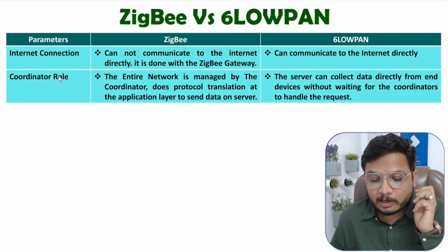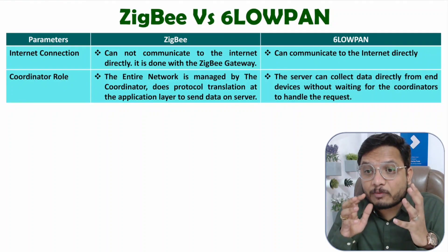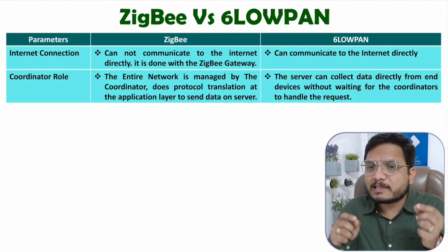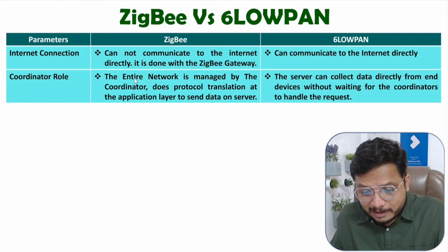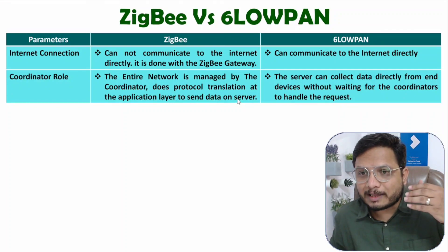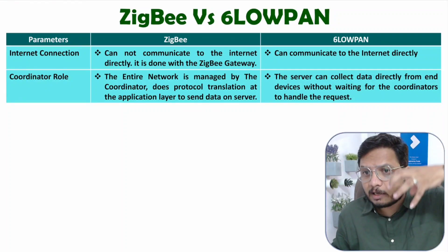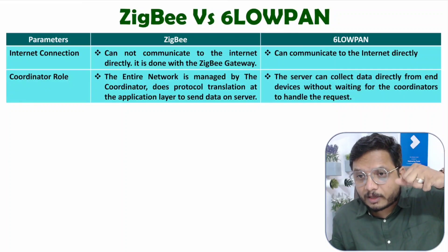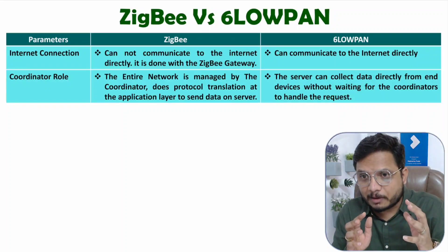The second parameter is the coordinator role. The coordinator in a ZigBee network is a network controller — the entire network is controlled by the ZigBee coordinator. The whole network is managed by the coordinator. It performs protocol translation at the application layer to send data to a server, and communication to other networks happens via the coordinator only. In a tree topology, the root is the ZigBee coordinator.